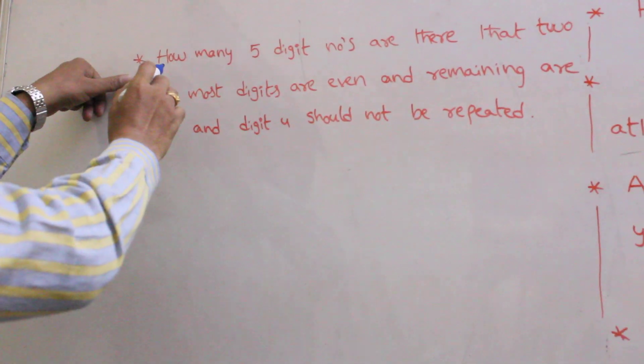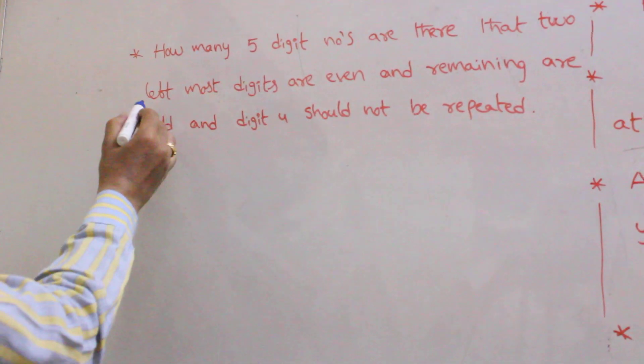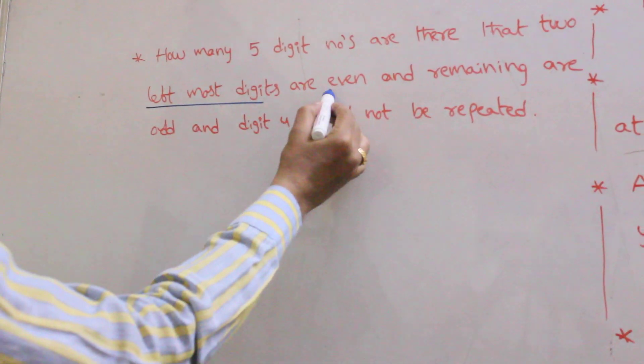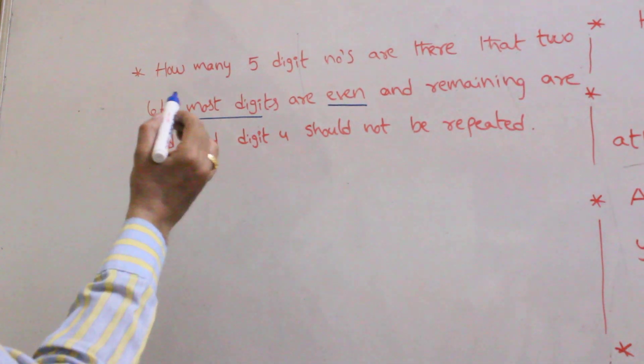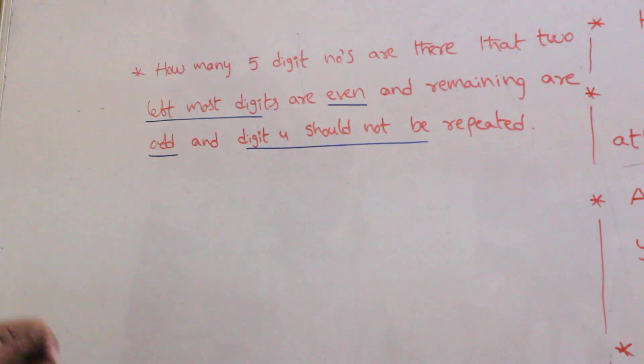Let's give an example. How many 5 digit numbers are there that two left most digits are even and remaining are odd, and digit 4 should not be repeated? That is the question.